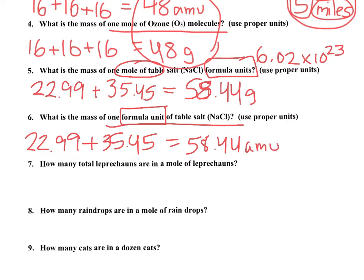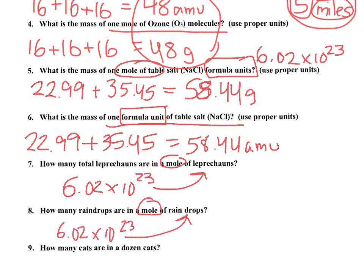If you take a look at number seven, how many total leprechauns are in a mole of leprechauns? So, if I have a mole of leprechauns, remember, a mole represents a number. If I have a mole of leprechauns, I have 6.02 times 10 to the 23rd leprechauns. How many raindrops are in a mole of raindrops? Well, if I have a mole of raindrops, I have 6.02 times 10 to the 23rd raindrops. That word represents that number. It's Avogadro's number.